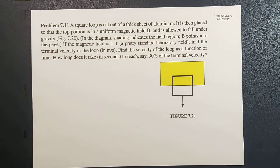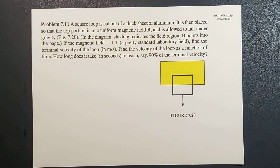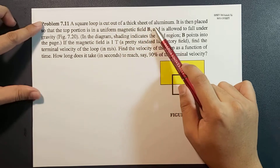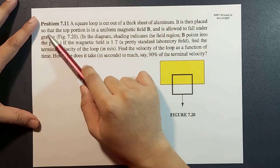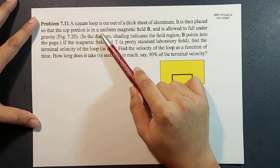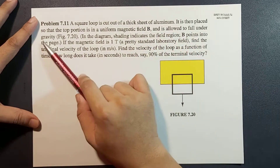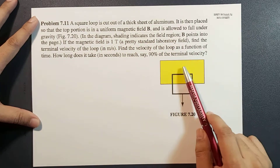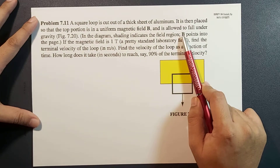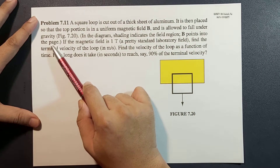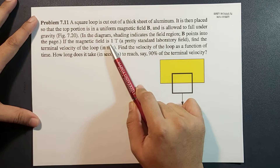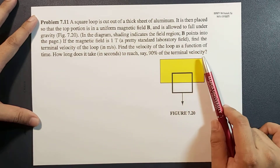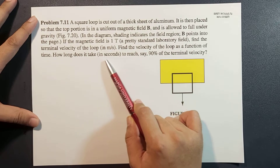What's up guys, it's me Sir Ernest and today we're going to solve problem 7.11 of Griffiths fourth edition. The problem reads: a square loop is cut of a thick sheet of aluminum, then it is placed so that the top portion is in a uniform magnetic field B and is allowed to fall under gravity. We need to find the terminal velocity of the loop if the magnetic field is one tesla, find the velocity as a function of time, and how long it takes to reach 90% of the terminal velocity.